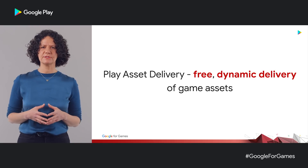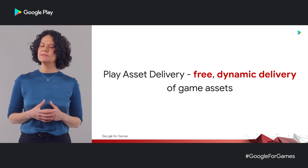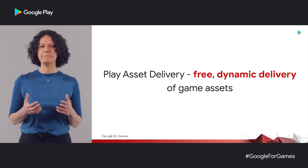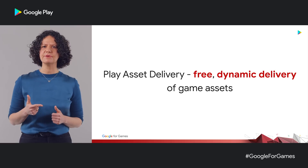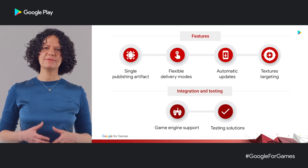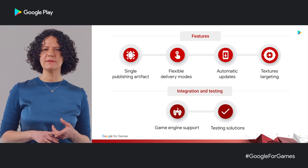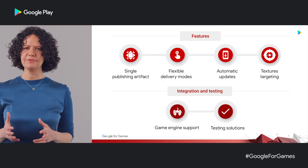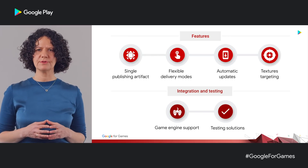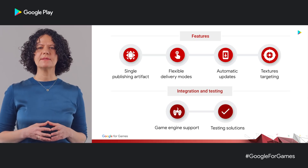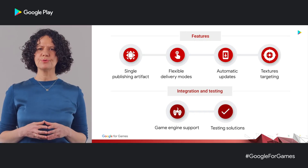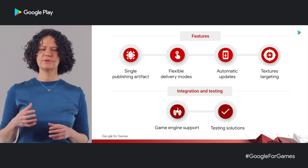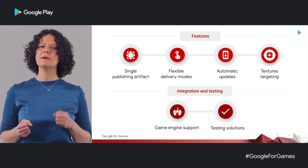To address the unique needs and challenges that are typical for high-quality games, we are announcing today a new set of delivery features suited for games. This new product is called Play Asset Delivery, or PAD. It offers free, dynamic delivery of all your game assets. In today's talk, we'll cover the four aspects of Play Asset Delivery: the publishing format, which extends the app bundle and lets you publish a single artifact to Play including all the resources your game needs; delivery mode, that lets you control when and how Play delivers your game assets; auto-update, that takes care of keeping your game assets up to date; and texture compression format targeting, which helps you serve optimal performance assets to the requesting device. We'll then talk about integration and testing, touching on the game engine integration and our testing solutions.